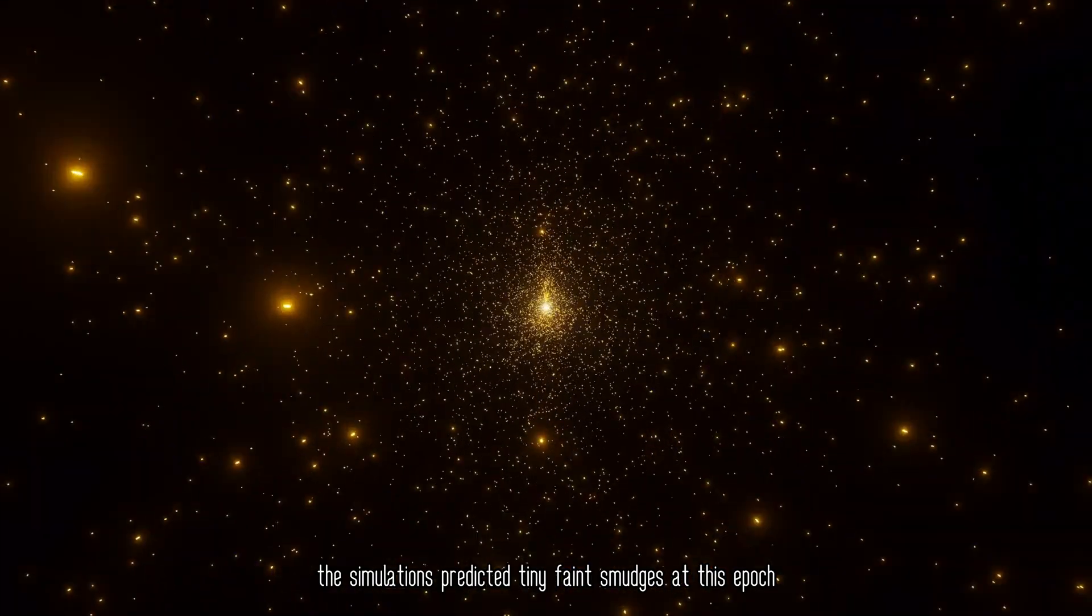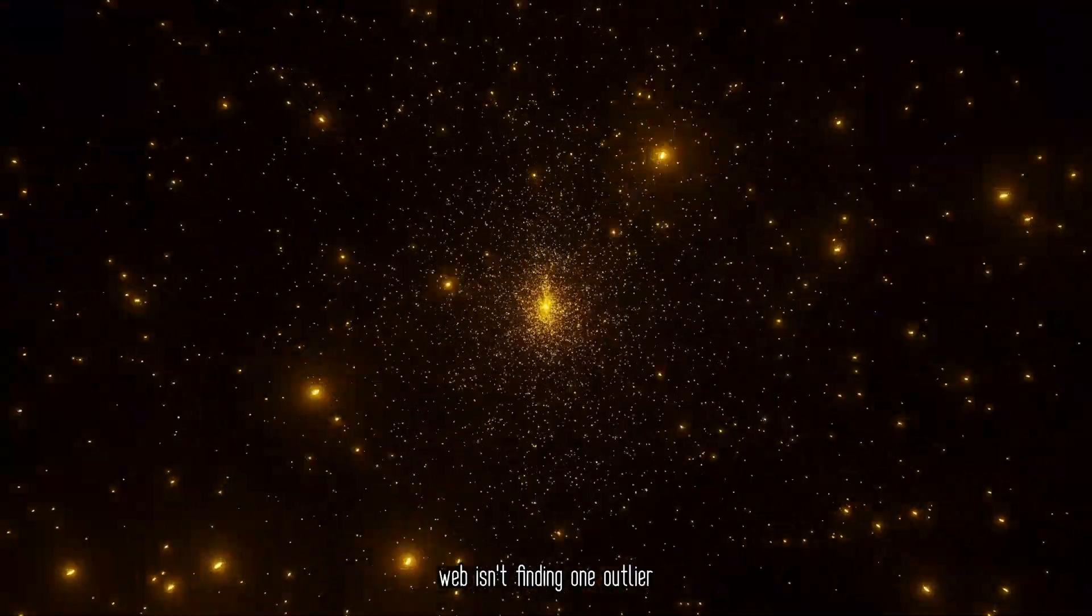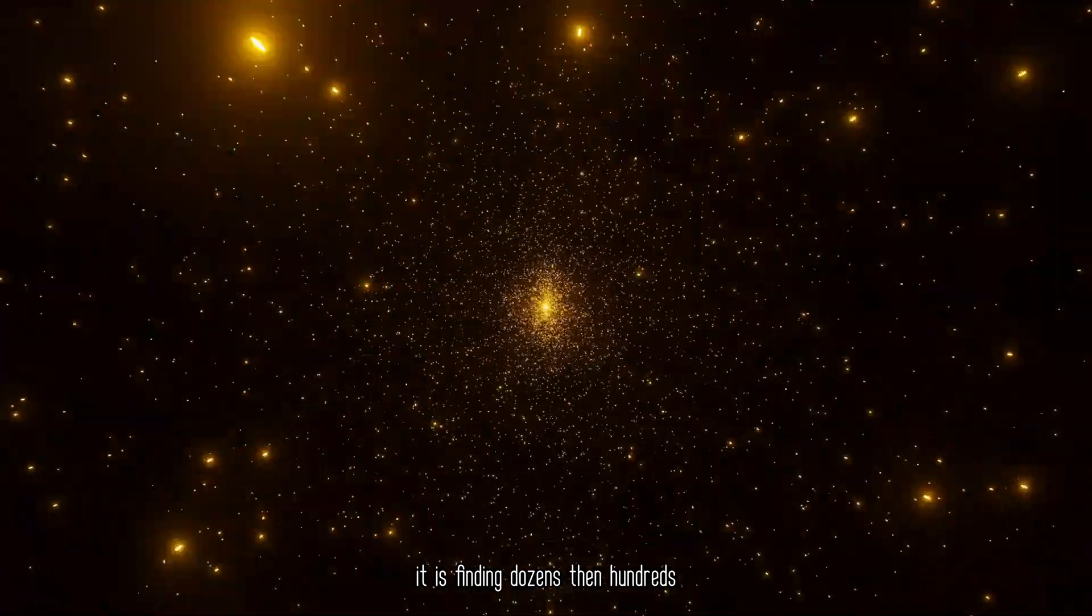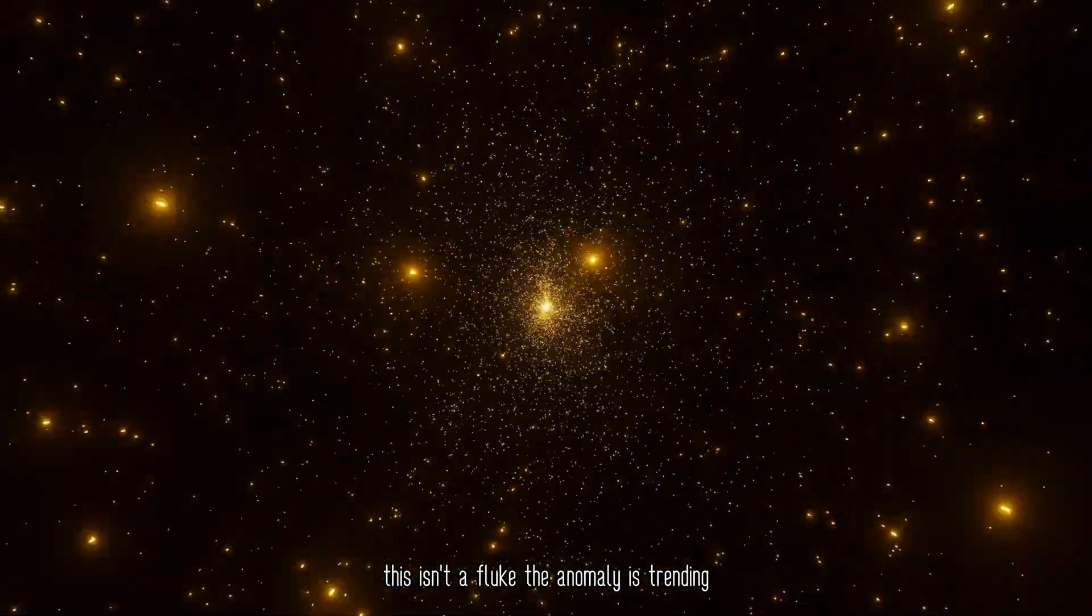The simulations predicted tiny, faint smudges at this epoch, not fully-fledged cities of stars. Webb isn't finding one outlier, it is finding dozens, then hundreds. This isn't a fluke. The anomaly is trending.